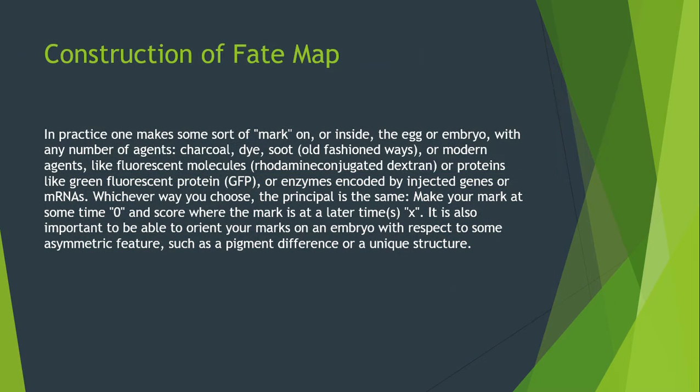For construction of a fate map, in practice one makes some sort of mark on or inside the egg or embryo with any number of agents — charcoal, dyes, or modern agents like fluorescent molecules, proteins, or enzymes. The principle is the same: you can mark it with an X or color it however you choose.